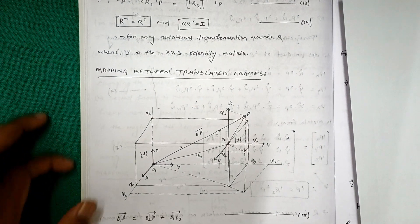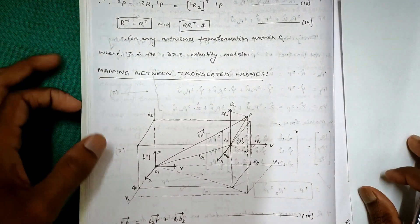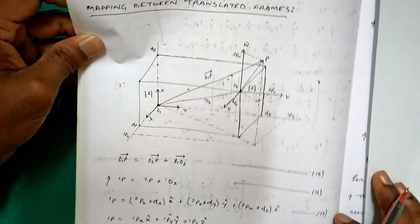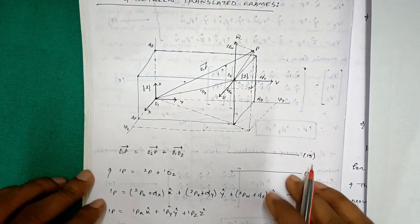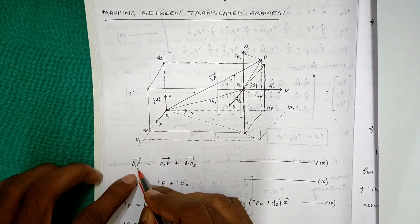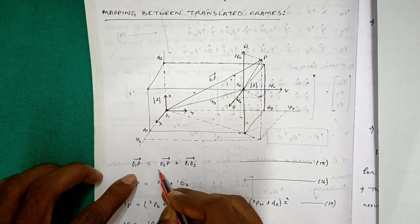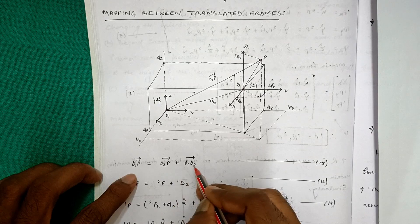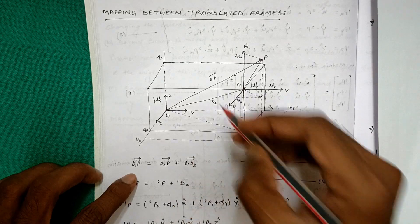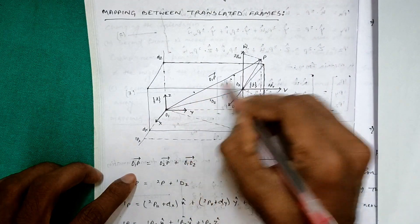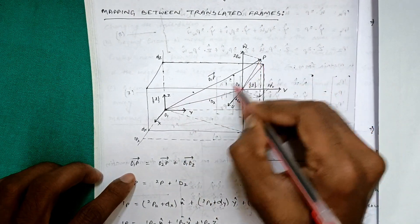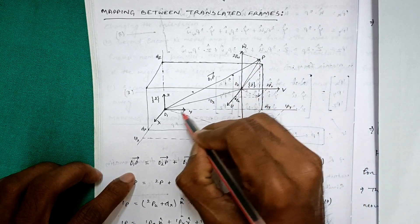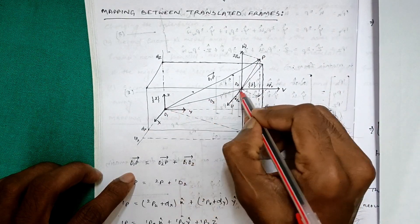Now we establish the vector relationship: the vector O1P is equal to the vector O2P plus the vector O1O2. That is, O1P = O2P + O1O2.